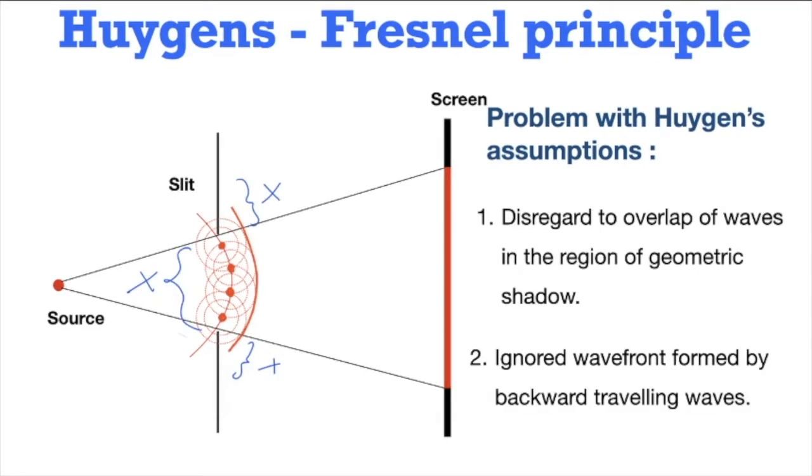The two main problems with Huygens assumptions were as follows. First, disregard to the overlap of waves in the region of geometric shadow. This happened because Huygens assumed that the amplitude or intensity is only there at the tangential point and nowhere else.